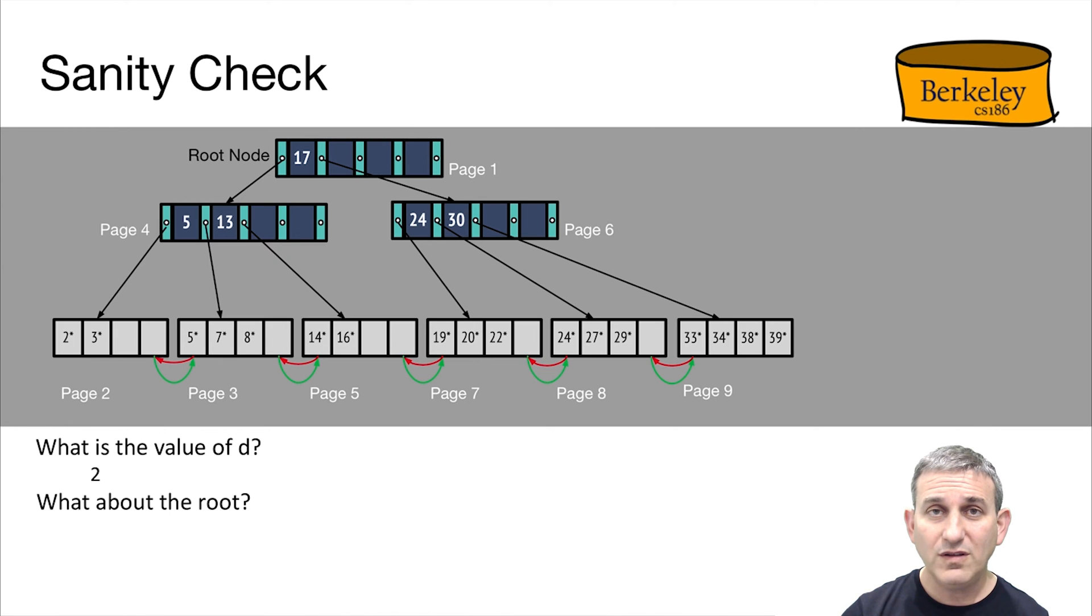Why isn't the root at least half full? Well, the root's a special case in the B-plus tree. We're not going to require the root to be half full. Every other interior node has to be half full, and that's going to give us our asymptotic bounds. As the tree grows, the interior nodes grow. There's more and more interior nodes. There's always only one root. So no matter how big the tree goes, we only have one exception, and it doesn't affect our guarantees of logarithmic search.